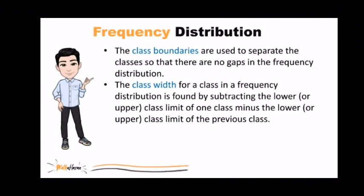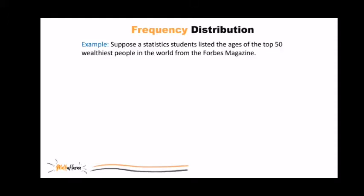We also need to study some of the important parts of frequency distribution, but I think it would be easier if I'll just show it to you. Let's take a look at this example. Suppose a statistics student listed the ages of the top 50 wealthiest people in the world from the Forbes magazine.